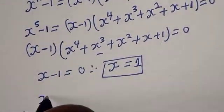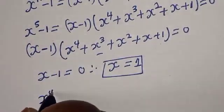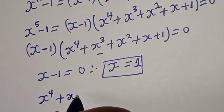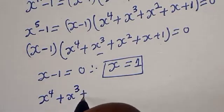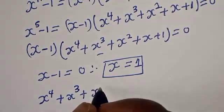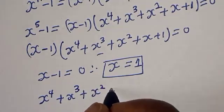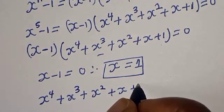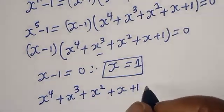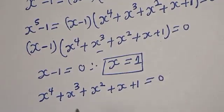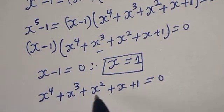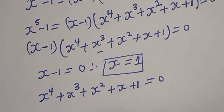Case two: x raised to power 4 plus x raised to power 3 plus x squared plus x plus 1 is equal to 0. Now let's divide all terms through by x squared.